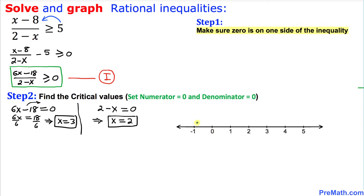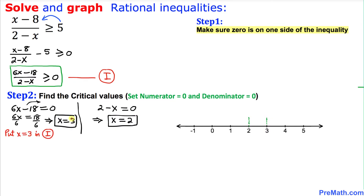Here is our real number line and we are going to identify these two critical points. x equals 2 is right here and x equals 3 is right here. Now we are going to check both of these critical points.